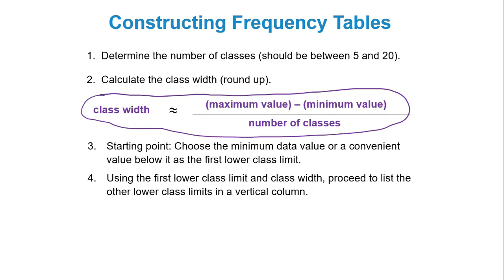Fourth, using the first lower class limit and class width, proceed to list the other lower class limits. So if I picked 40 as my lower class limit and my class width is 10, 40 plus 10 gives me 50, plus 10 again gives me 60, 70, 80. Those are going to be my lower class limits.